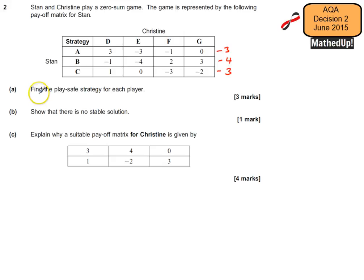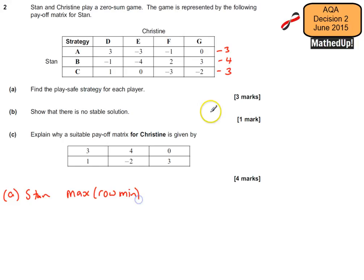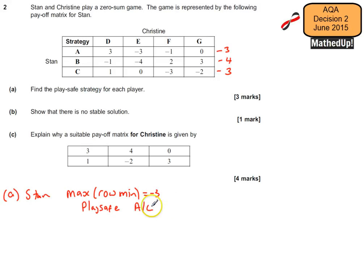For Stan, his play safe strategy is the maximum of the row minimums. His row minimums are negative 3, negative 4, and negative 3, and he wants the maximum of those, which is negative 3. So his play safe strategy is going to be A or C — either A or C.